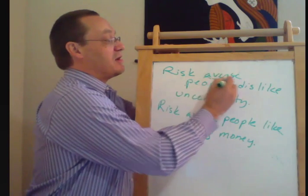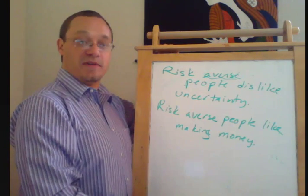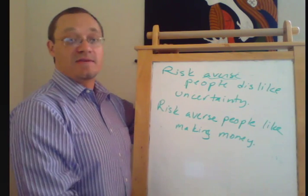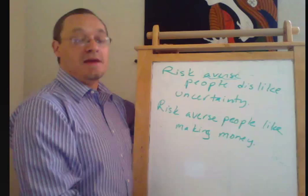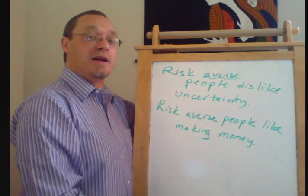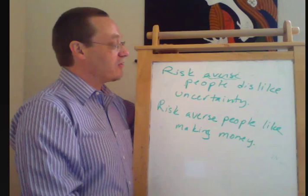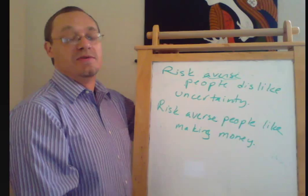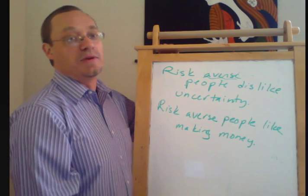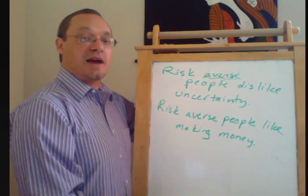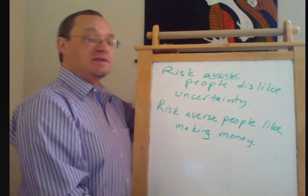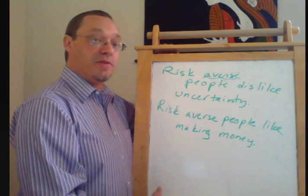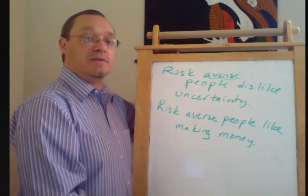So again, risk aversion is not infinite. The fact that people dislike risk doesn't mean that's the only thing they care about. A lot of us dislike getting up in the morning, but we also care about keeping our jobs, so we manage to get up in the morning. Or a lot of people dislike having to exercise, but there are a lot of health benefits to that and it makes you feel good after you actually get through it, so you're likely to actually do it. So again, people dislike uncertainty, but if there are other benefits that come along with the uncertainty, they may be willing to tolerate the risks.